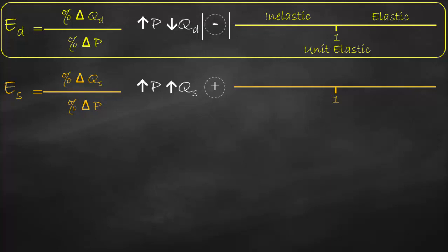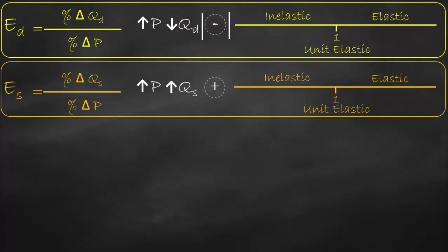If price elasticity of supply equals one it's unit elastic, bigger than one it's elastic, and lower than one it's inelastic. Since income is one of the factors that shifts the demand curve, our third type of elasticity is income elasticity. Instead of dividing by percent change in price, we divide by percent change in income.